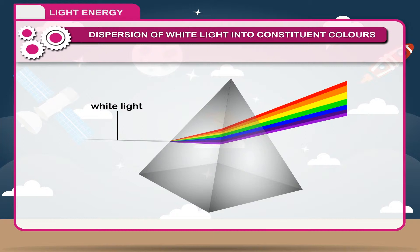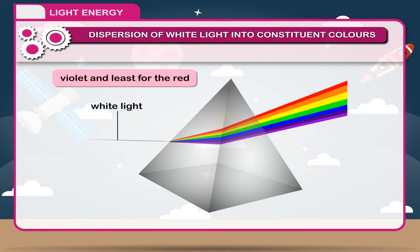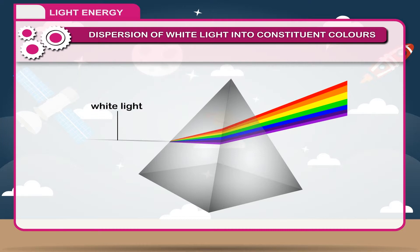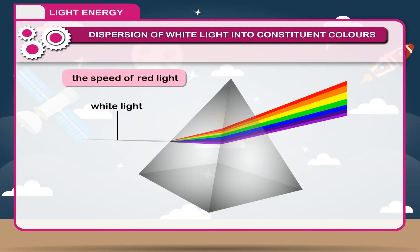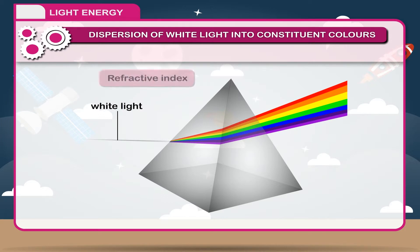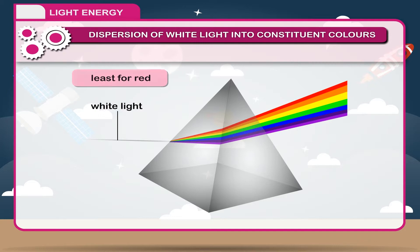2. During the passage through a prism, different colours deviate through different angles. The deviation is maximum for violet and least for red. 3. In glass, the speed of red light is maximum while violet moves with minimum speed. 4. The refractive index of a medium is different for different colours — least for red and greatest for violet.